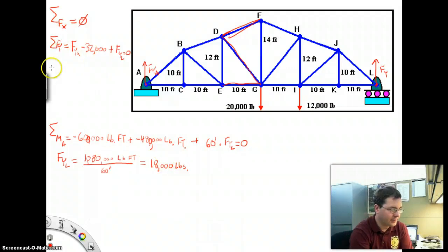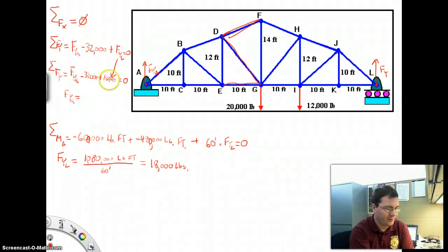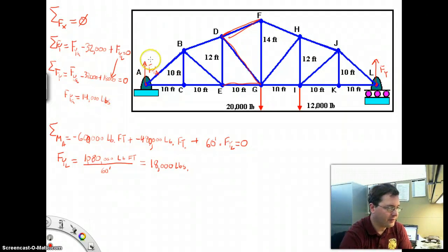Let's go back to our original formula where we had the sum of the forces in the Y direction because now we know the Y force at point L. So the sum of the forces in the Y direction equals the force in the Y direction at point A minus 32,000 plus 18,000 equals 0. I took and substituted in for the force in the Y direction at L, the number that we just figured out. So the force in the Y direction at A equals basically 32,000 minus 18,000, which is 14,000 pounds. And again, this is reasonable.